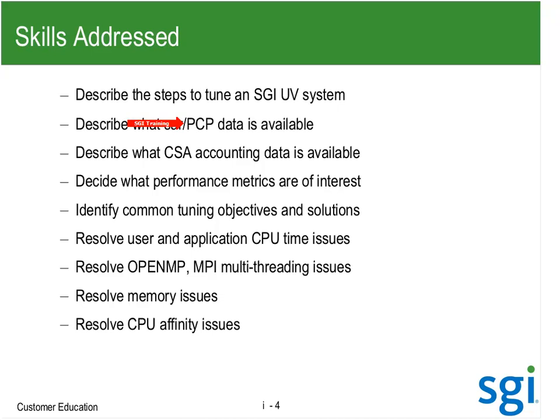There is something called CSA accounting — I'm probably not going to cover that much; it's not supported anymore. Instead, we're going to spend time on PBS accounting data. I need to get jobs running under PBS this week and start looking at service times, queue times, things of that sort. From there, you've got to figure out what performance metrics are of interest depending upon your site and workload. For example, in the database market I care about transactions per second; in the video market, video frames per second.